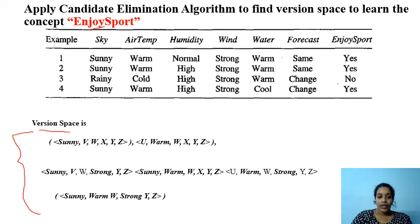This one is generalized, this one is specialized, and this one is in between. All the six hypotheses constitute the version space for this problem. After solving all these problems, read the algorithms.